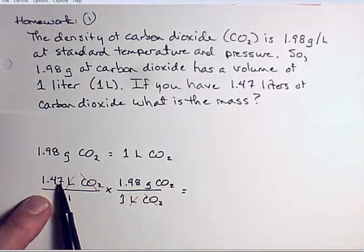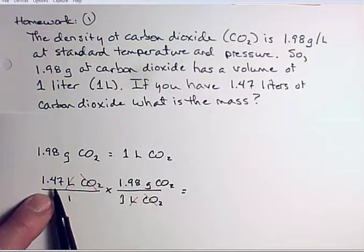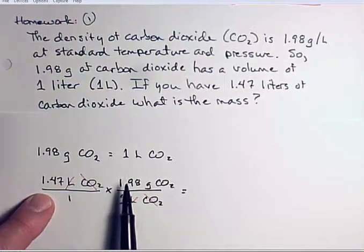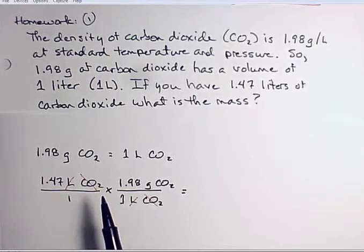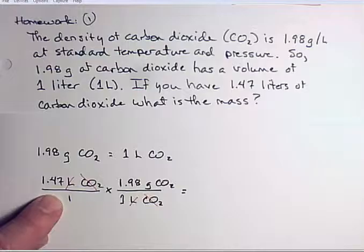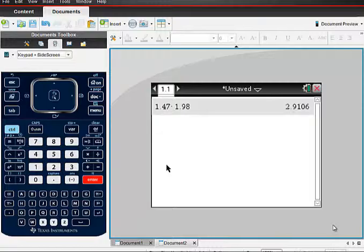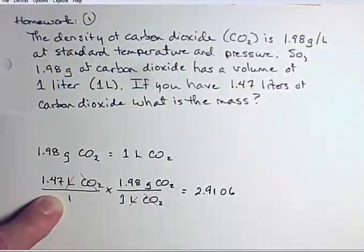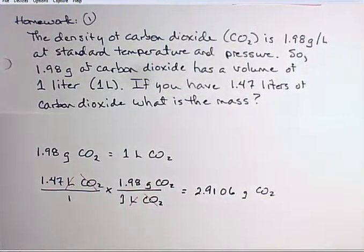Now, because we've got a number other than the number one on the top here and the top here, we have to multiply these two numbers. You multiply across the top. You divide by what's on the bottom. In this case, only ones are on the bottom. When you divide a number by one, you get the same number. So it's really not necessary to do that mathematical operation. We're only going to multiply what's across the top here. So we've got 1.47 times 1.98. And we get this number here. All right. Now, the units we have left are grams. The species is CO2.